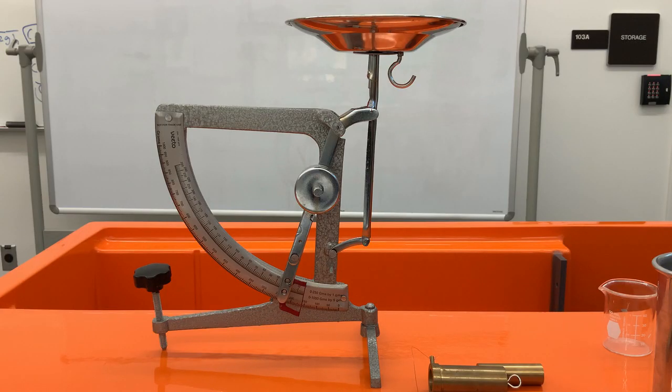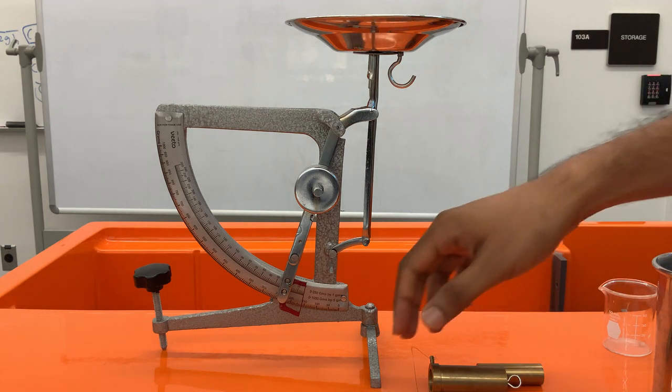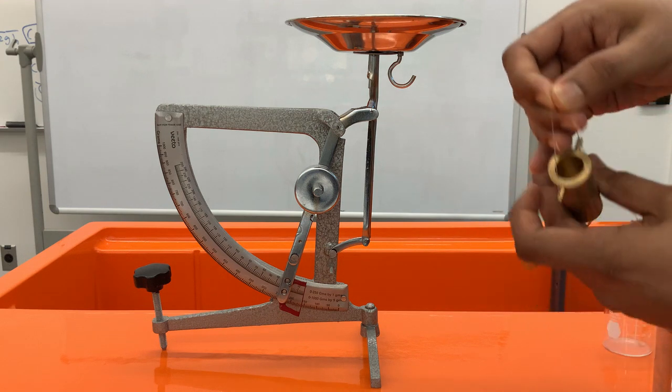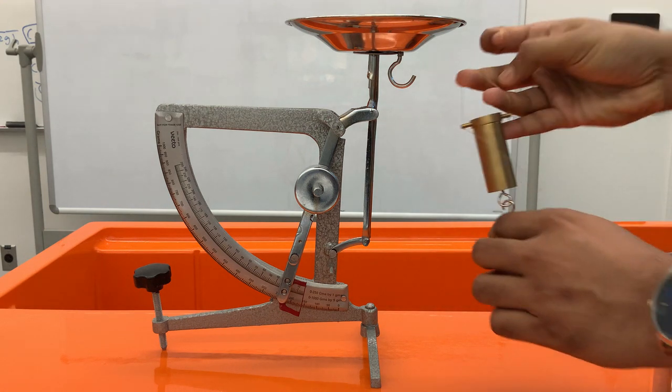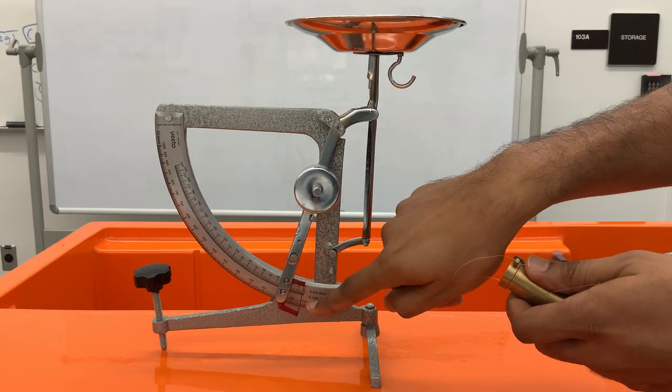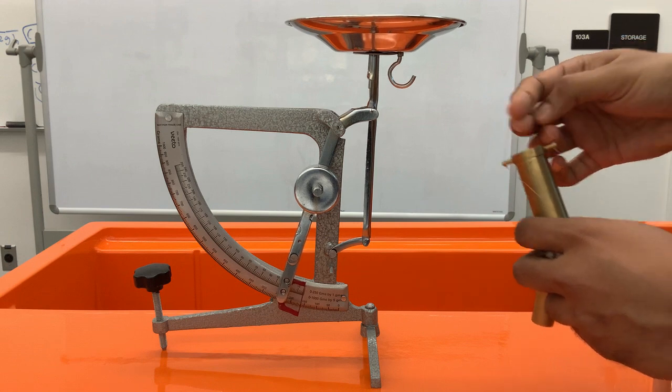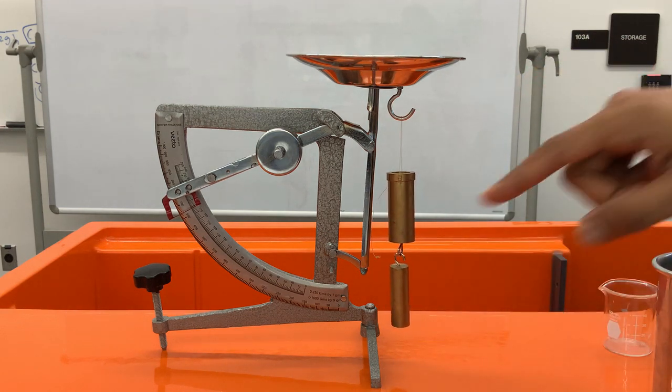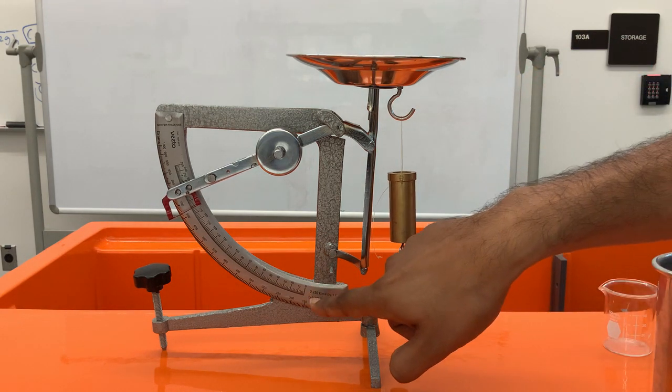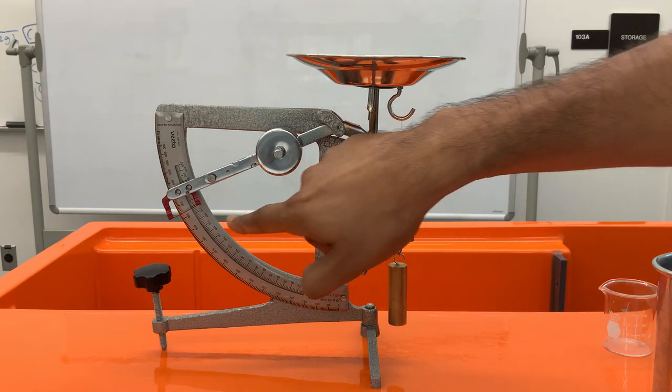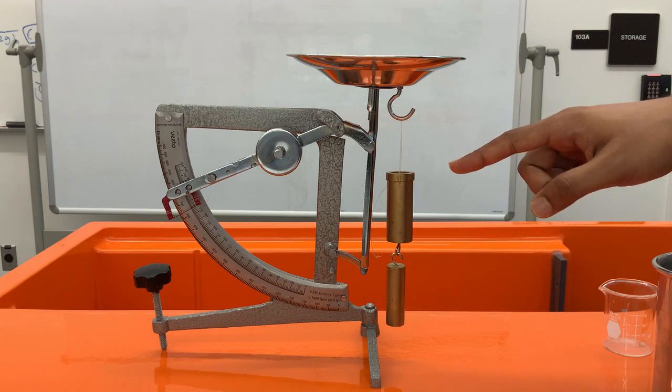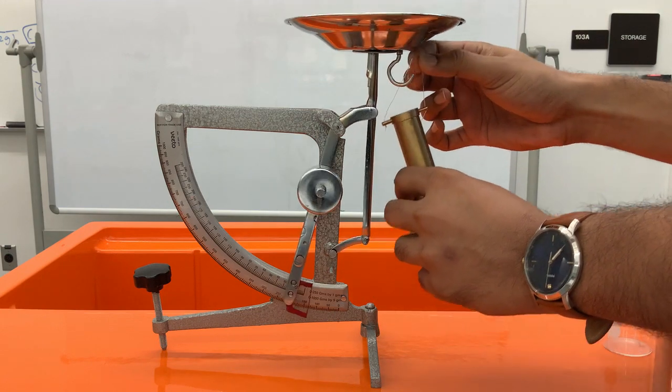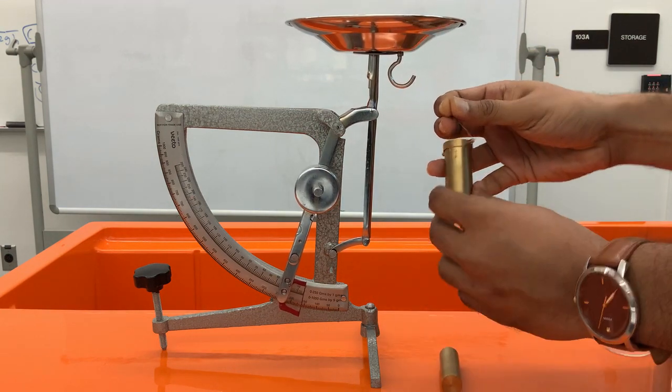In this test we are going to take four stages of data. First we are going to hang the empty bucket with the cylinder dry so there is no water inside. Make sure it is balanced at zero. I hang them together. I am using the top scale which is from zero to 250 grams. So if I look it is around 179 grams.